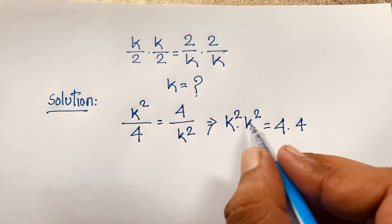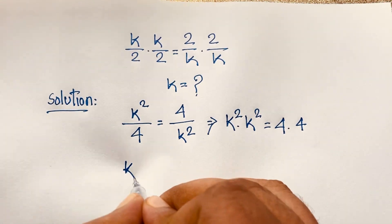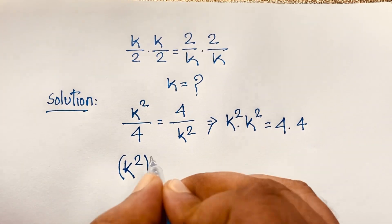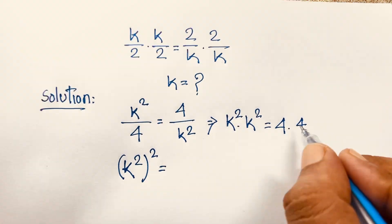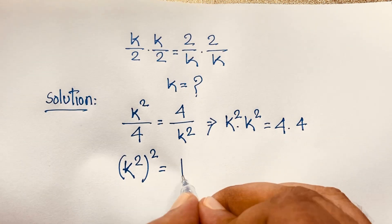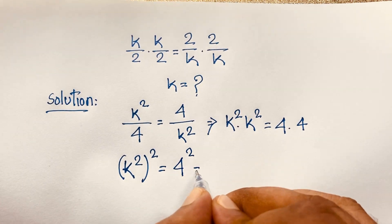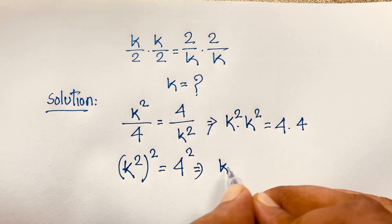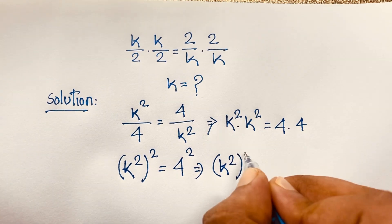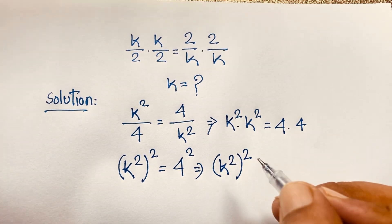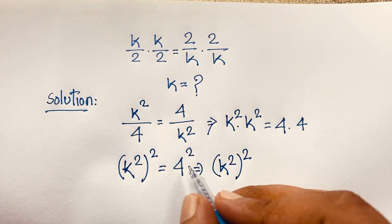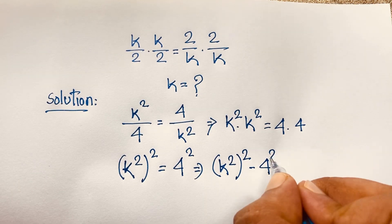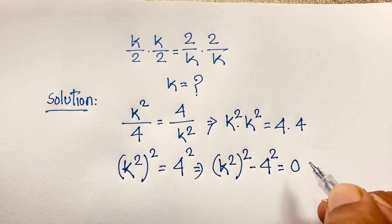K squared times k squared gives k to the power 2 raised to the power 2, and 4 times 4 gives 4 to the power 2. Now we have k to the power 4. If I move the 4 squared to this side, it becomes negative 4 squared, giving us k to the power 4 minus 16 equals 0.